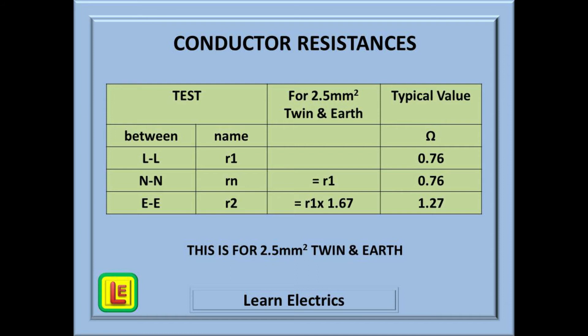Here we can see the relationship between the three conductor resistances. Line-to-line will have a certain value, 0.76 ohms in our example. Neutral-to-neutral should be about the same value, and earth-to-earth will be about 1.67 times greater than line-to-line, or 1.27 ohms.